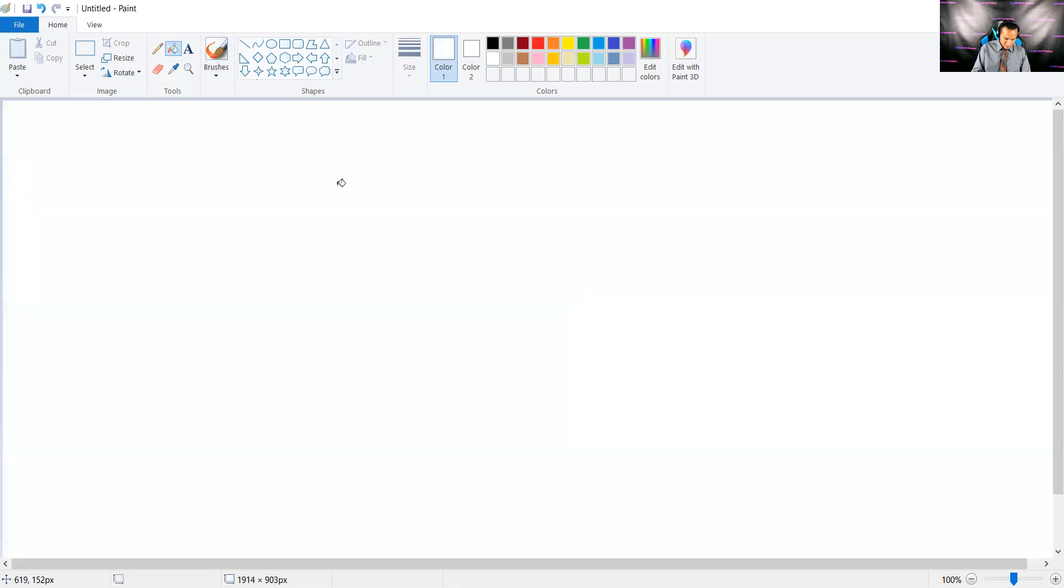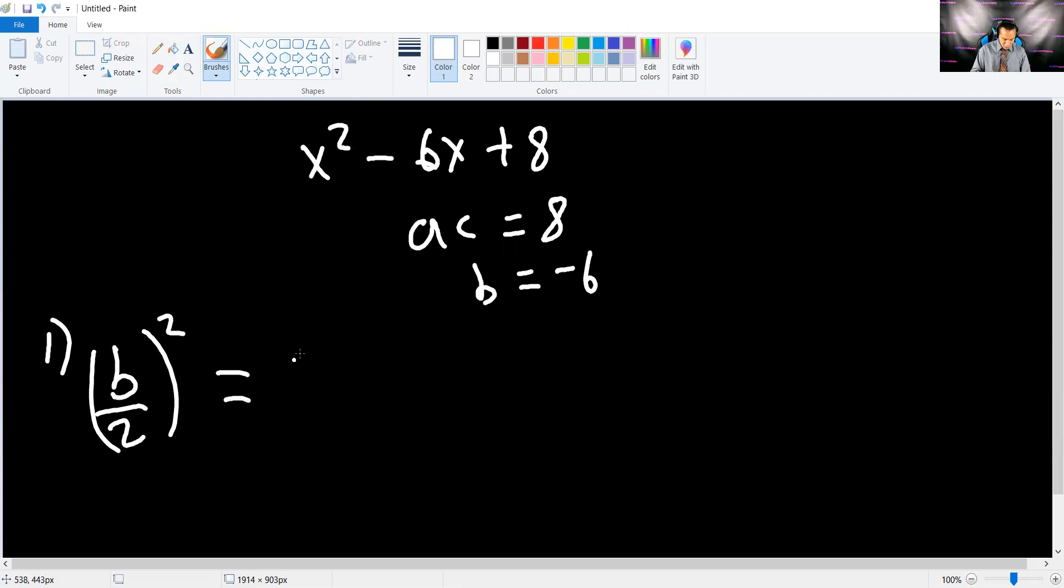So let me redo all this. We got the original one. X squared minus 6X plus 8. AC was 8. B was negative 6. Remember, in order to complete the square, you have to do step 1. B over 2 squared. In that case, that was negative 6 over 2 squared, which is negative 3 in parentheses squared, which is just 9.